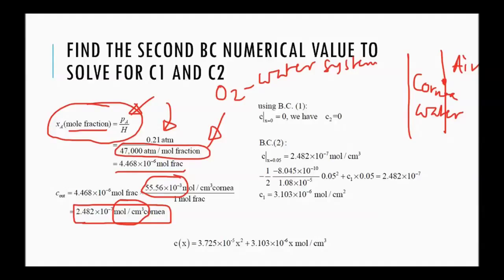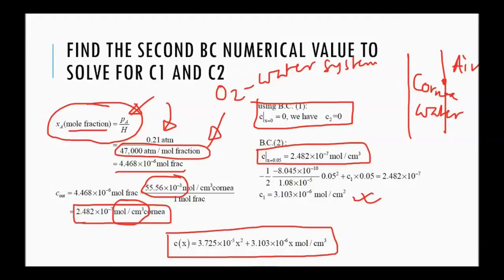So, this conversion factor from mole fraction to moles per centimeter cube is actually provided in your problem description. So, now we have one boundary condition that was given anyway. That's the inner surface. It's 0. And the outer surface, we just got. So, with these two boundary conditions, we can find C1 and C2. So, this is C1 and then plugging in C1, we can find C2. So, we can plug in all of that to get concentration as a function of position.